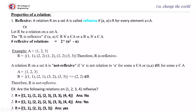A relation R on set A is not reflexive if a is not related to a for some a ∈ A — that is, (a,a) ∉ R for some a ∈ A. For some elements, there will not be an element related to itself. For example, if A = {1,2,3} and R = {(1,1),(2,1),(3,2),(3,3)}, here (2,2) is not there, so this relation R is not reflexive.